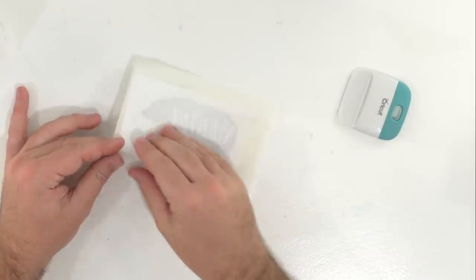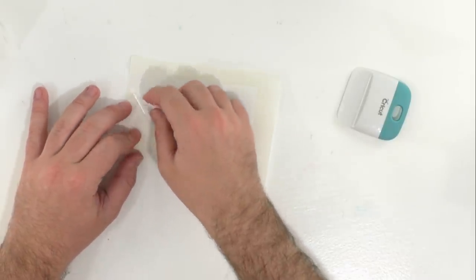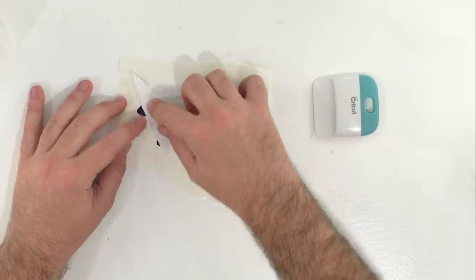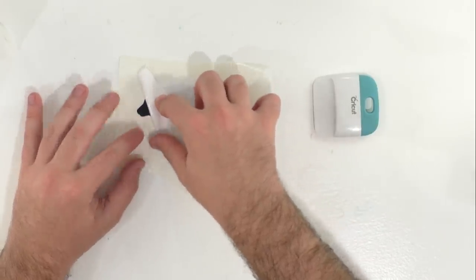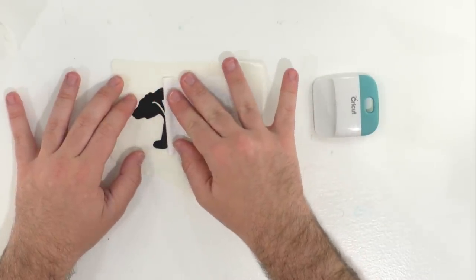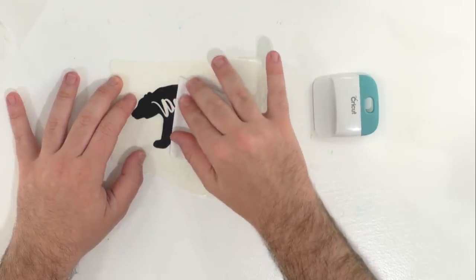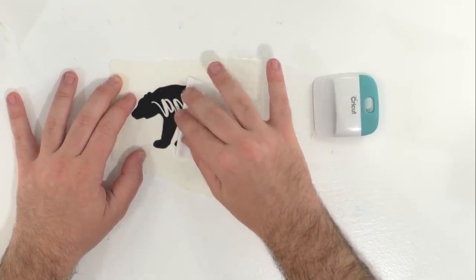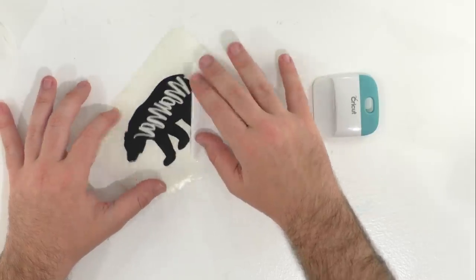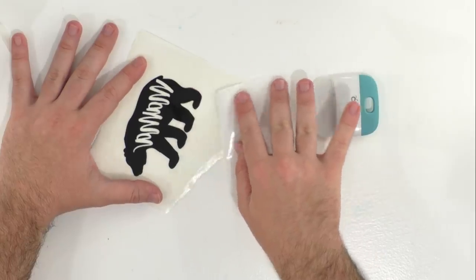Once you feel like you have burnished quite a bit though, you can start peeling back just like so. Again, we like to refer to this as going with gravity. Another tip is we like to keep the backing sheet of the vinyl very tight, so you just peel back just like so until you have the entire image transferred over onto that transfer tape.